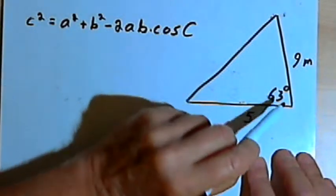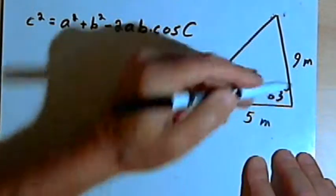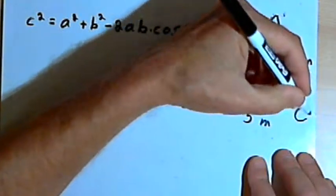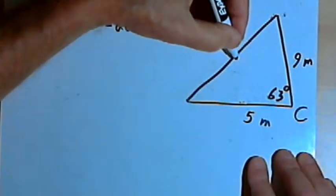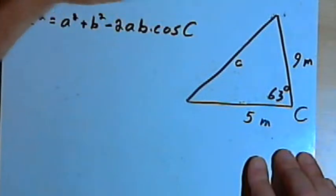Now here's where the letters go. The angle we know is going to be angle c. The side opposite angle c will be side small c.